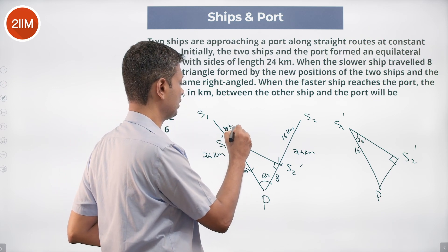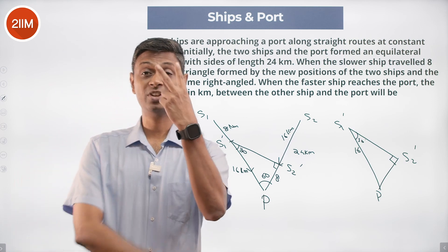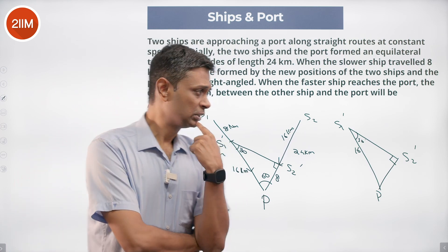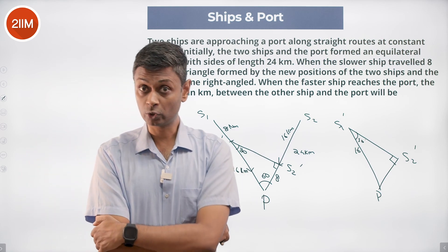The faster ship is twice as fast as the slower ship. So when the faster ship reaches the port, that means the faster ship has traveled 24 kilometers, the slower ship should have traveled 12 kilometers, half of that.